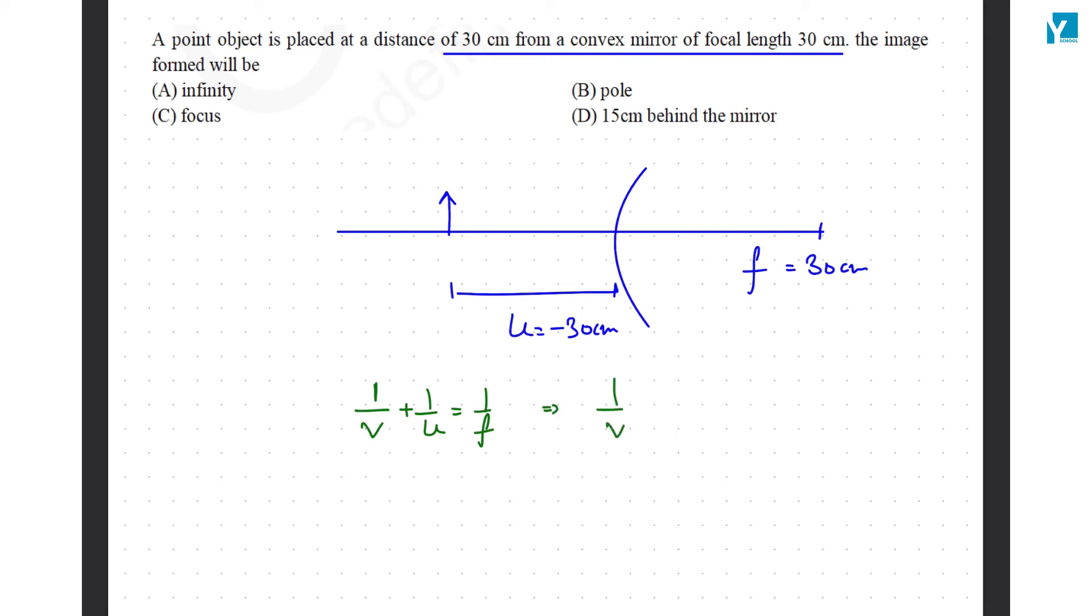This will give you 1 by V which is equal to 1 by F plus 1 by U, because negative of U just goes there and adds up.